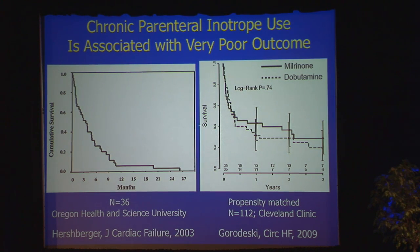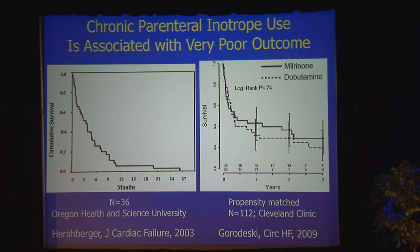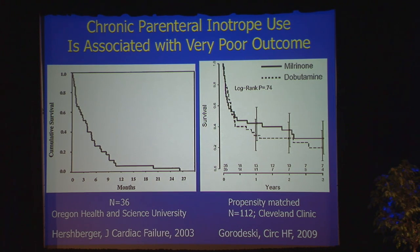More recent data have come from Cleveland Clinic. Whether you're on milrinone or dobutamine, the prognosis if you're inotrope-dependent at one year is still under 50%, and two-year survival is even worse. So if you have a patient who is truly dependent on inotropes, you need to do something else for them, or consider a referral to palliative services or hospice, because their outcomes are that bad.